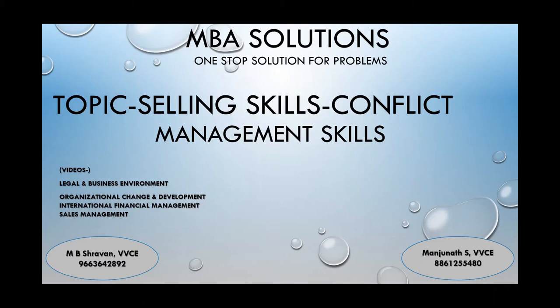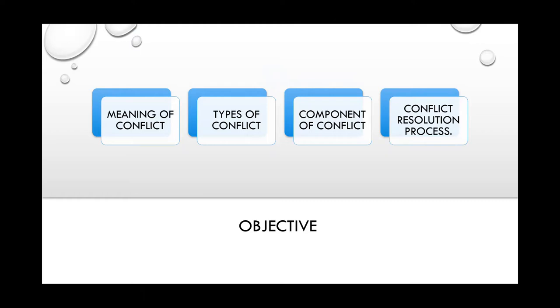In our last two videos, we have discussed on selling skill. In the first video, we discussed on communication skills, and in the second video, we discussed on listening skill. Today we are going to continue with selling skill on conflict management skill. In conflict management skills, we are going to learn and understand: first, meaning of conflict; next, types of conflict; third, components of conflict; and lastly, conflict resolution process.